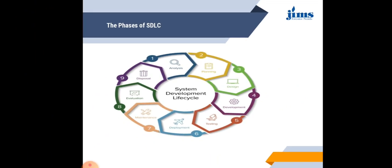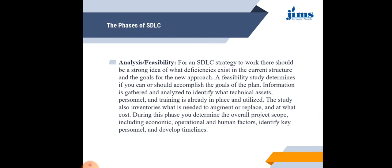So those are the SDLC phases — basically there are seven phases of SDLC, from Analysis to Maintenance. The first is Analysis and Feasibility. For an SDLC strategy to work, there should be a strong idea of what deficiency exists in the current structure and the goals of the new approach. A feasibility study determines if you can or should accomplish the goals of a plan. Information is gathered and analyzed to identify what technical assets, personnel, and training are already in place.